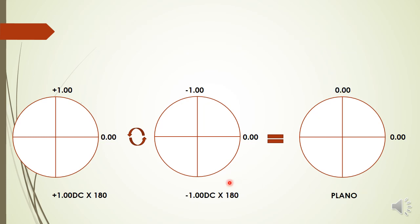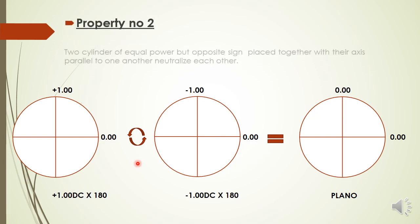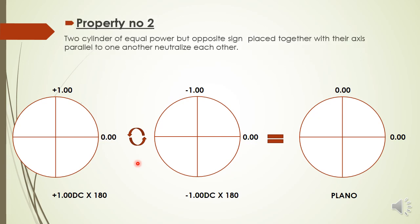Property two states that when two cylinders of equal power but opposite signs are placed together with their axes parallel to one another, they will neutralize each other. For example, plus 1 cylinder at 180 and minus 1 cylinder at 180 — the power is equal but the sign is opposite, with axes parallel. By simple addition, these two cancel each other.